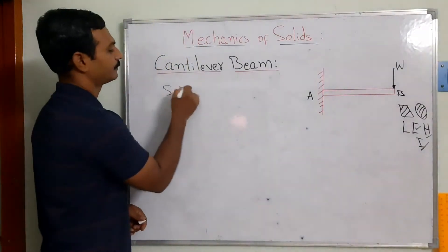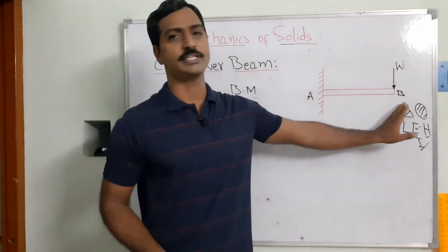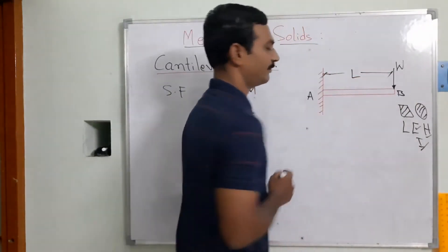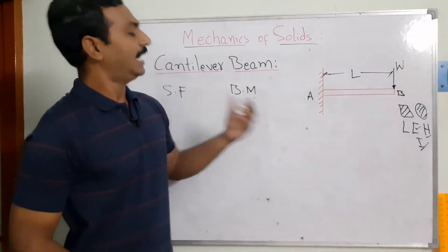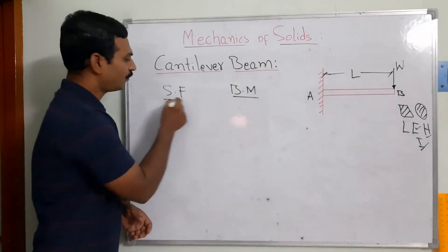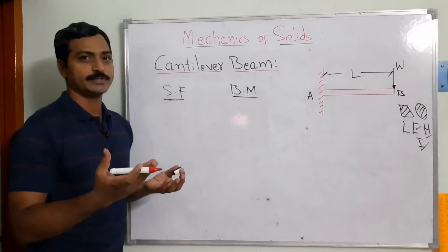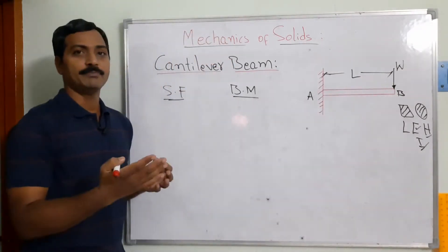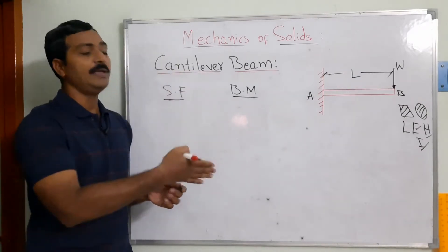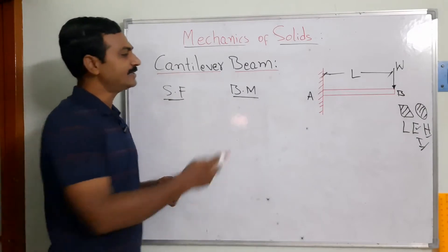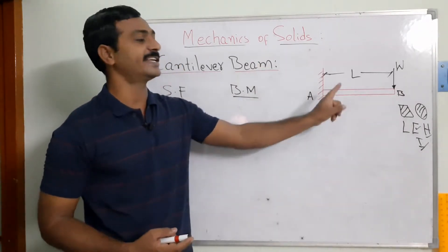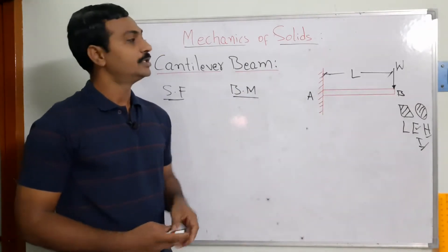We want to find the shear force and bending moment at any point on the cross section of this member. The beam has length L. The shear force is the algebraic sum of the transverse forces acting on the beam either to the left or right side of a section. The bending moment is the algebraic sum of the moments of transverse forces acting at any section, either to the left or right side.